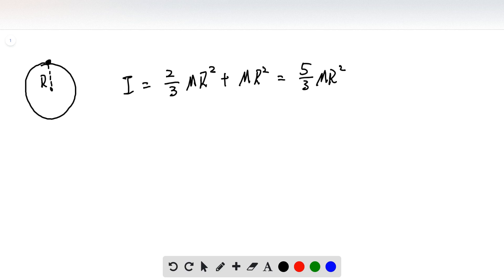And we know that the period is equal to 2 pi square root moment of inertia over mass gravitational acceleration, d, distance, which is radius in our case.